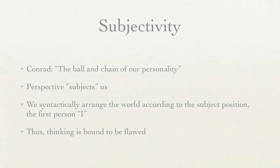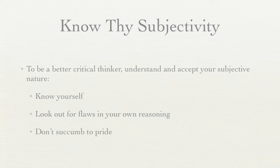Any illusion that we can somehow be completely objective is a dangerous delusion. We must accept our subjectivity as we accept the grammatical I — that subject position from which we syntactically arrange the world — and realize that our analyses, our critical thinking itself, is bound to be flawed. If we accept and acknowledge our human fallibility and subjectivity, we'll become better critical thinkers.